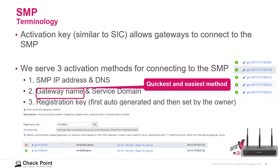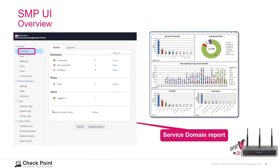There is an activation key, similar to SIC, that allows the gateway to connect to the SMP. There are three different ways to do that: SMP address and DNS, the gateway name and service domain — the quickest and easiest method — and a registration option which is first auto-generated and then can be set by the owner. The SMP user interface provides an overview showing connected gateways, number of plans, and logged-in users.